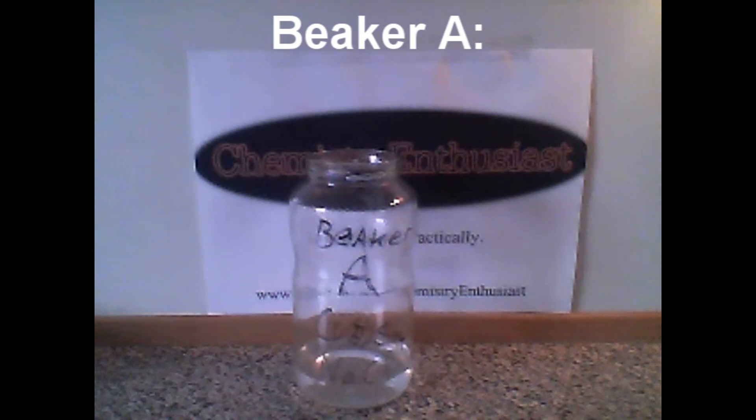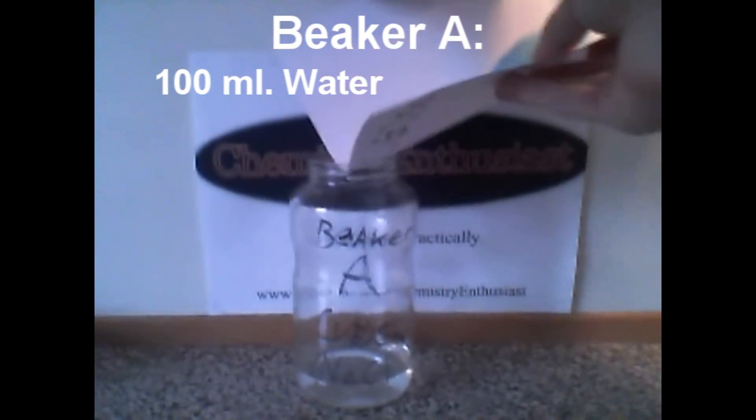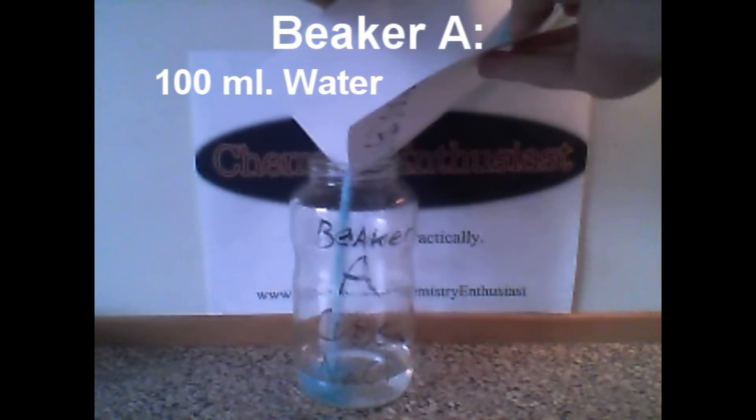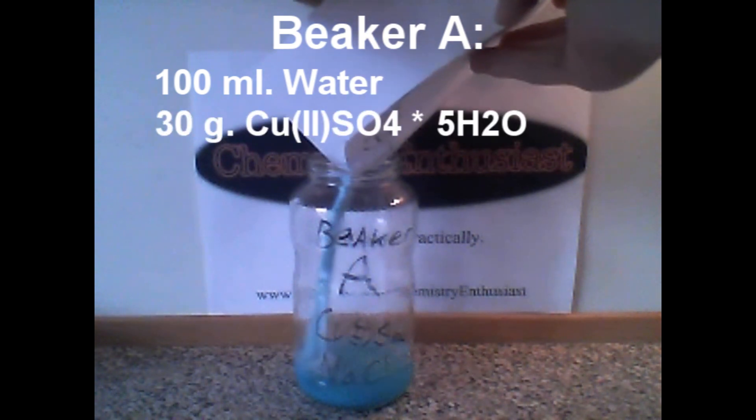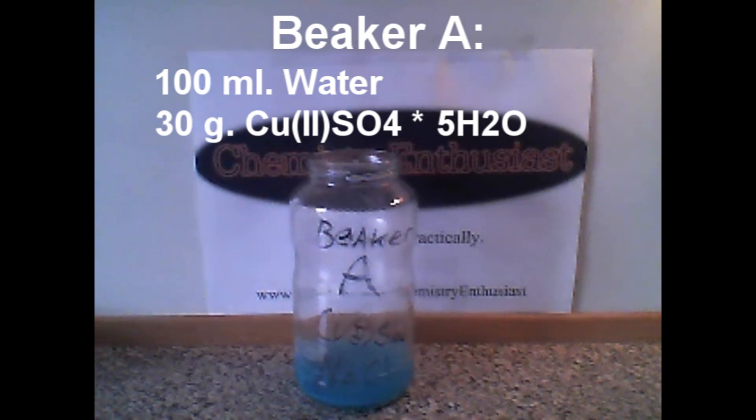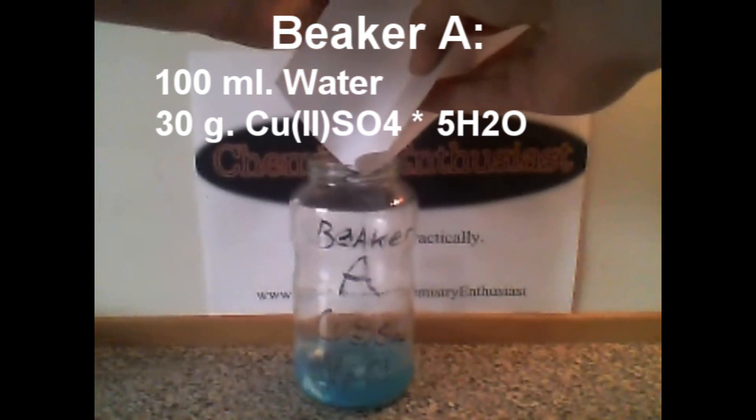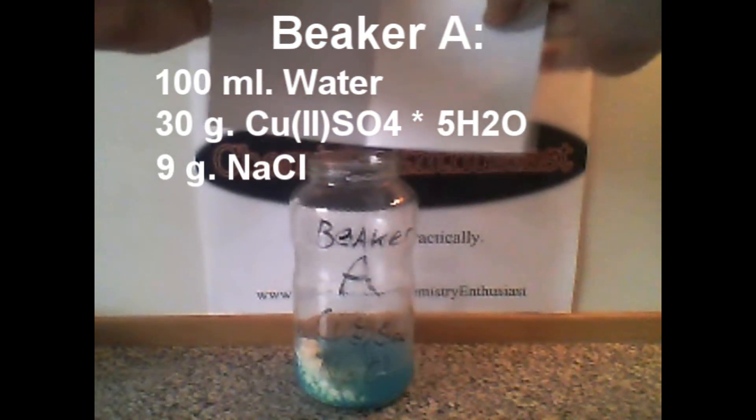In a beaker labeled A, pour 100 ml of water, 30 g of copper sulfate pentahydrate, and also pour in 9 g of sodium chloride.